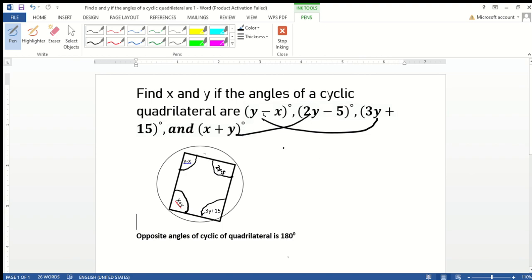So we have (y - x) + (3y + 15) = 180. That gives us y plus 3y, which is 4y, minus x plus 15 equals 180. Moving 15 to the right hand side, we get 180 minus 15, which gives 165. This forms equation one: 4y - x = 165.